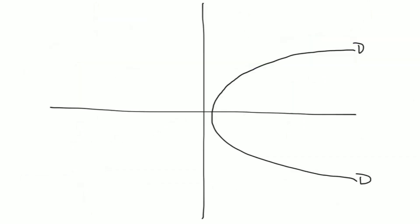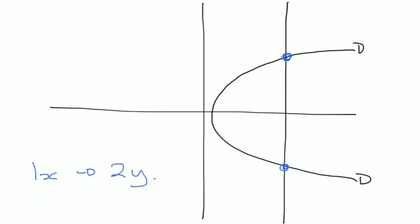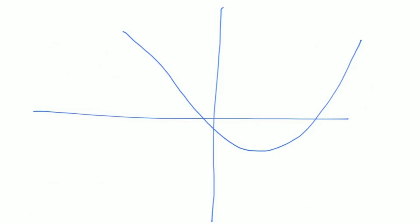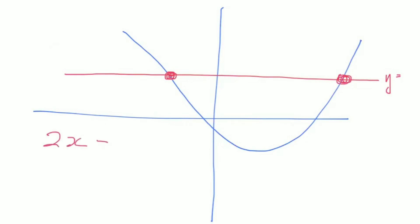To check, we draw a vertical line, which represents a single x value. If it crosses the graph at multiple points, then one x value is generating multiple y values, meaning we have a one-to-many. Then we draw a horizontal line, representing a single y value. If that crosses the graph multiple times, we have two x values corresponding to one y value, giving a many-to-one relationship.